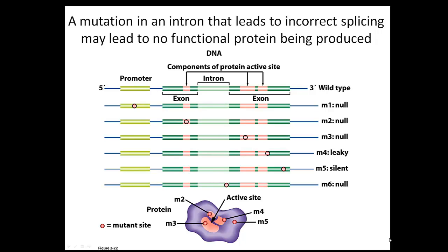Earlier in the course we talked about how mutations in introns can lead to loss of function of a protein. The really important sequences are the GU at the beginning of the intron, the AG at the end, and the branch point A. If one of those is mutated, the cellular machinery is not going to find the right place to do the splicing.